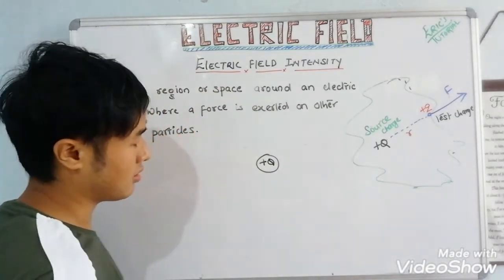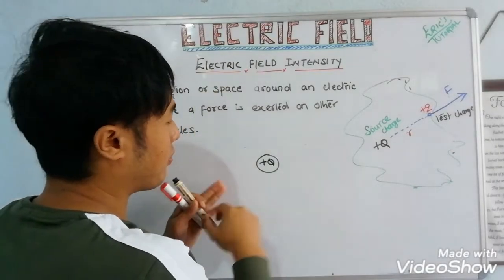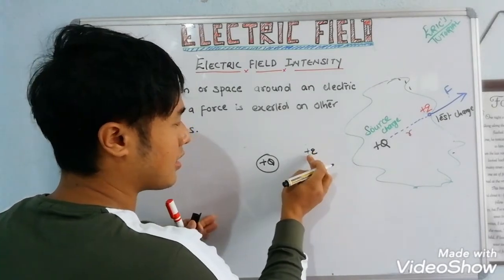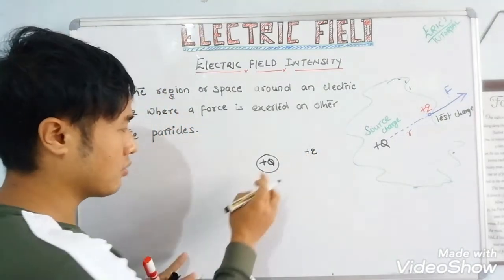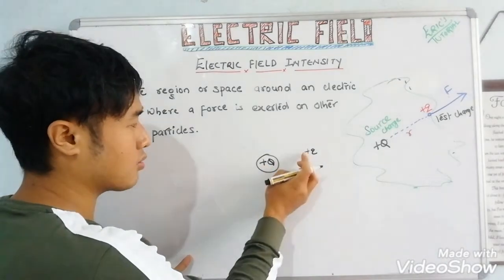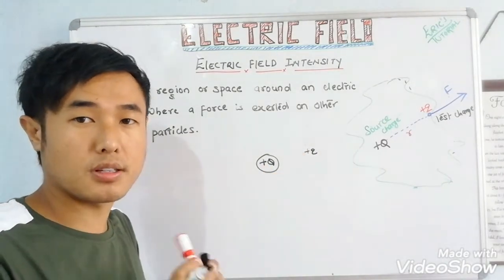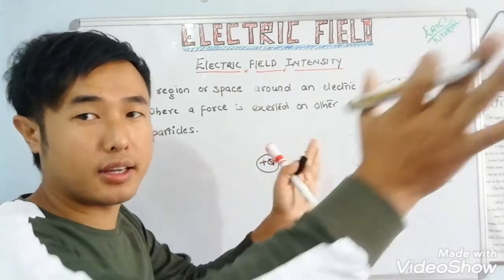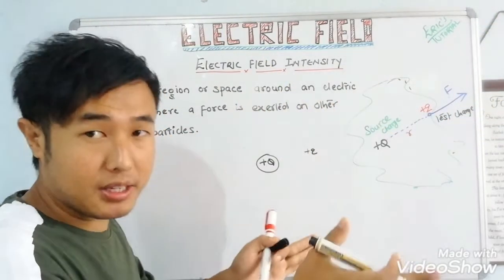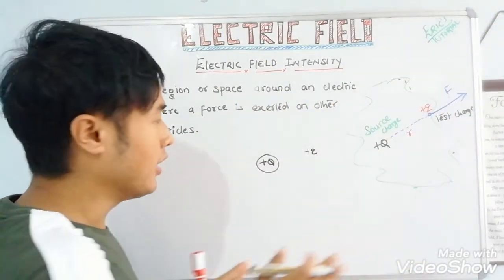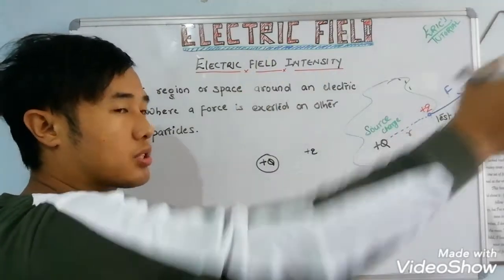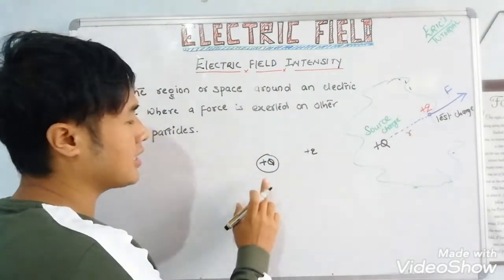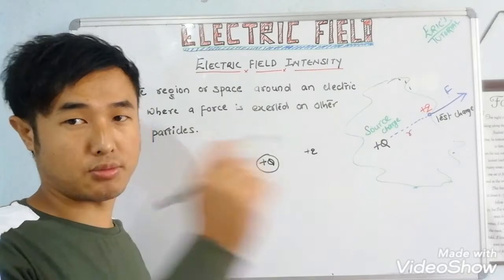We always use a positive test charge. When this positive test charge is placed near the positive source charge, since both are positive, the force experienced will be repulsive. When the force is in that direction, the electric field direction is defined accordingly.